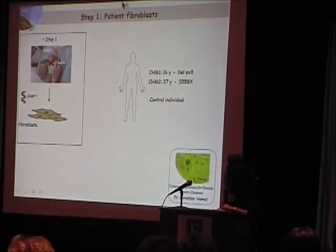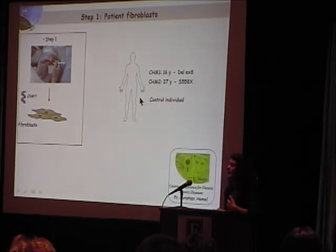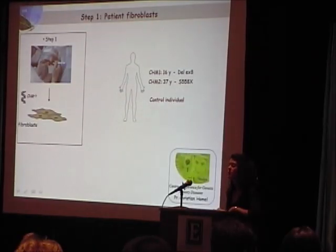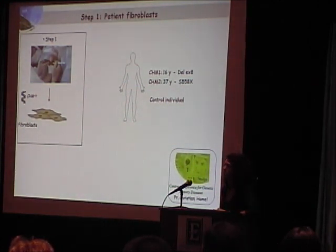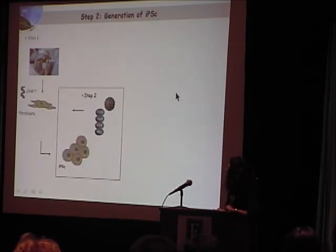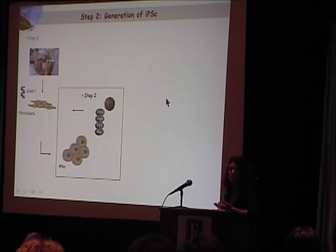To begin our project, we recruited two patients with CHM. These patients are members of France Choroideremia, and are recruited through the Centre of Reference for Genetic Sensory Diseases in Montpellier, which is directed by Professor Christian Amel. We took two patients that had two different mutations, and the results I will present to you today are actually from one of these patients.